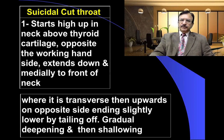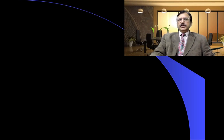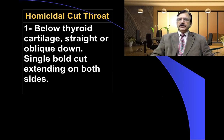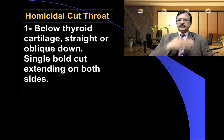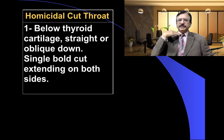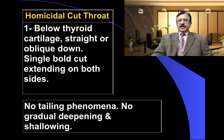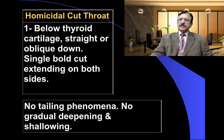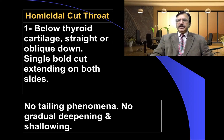In homicidal cutthroat, the wound is usually below the thyroid cartilage. It is horizontal — that is straight or oblique — and a single bold cut which usually lies on both sides of the neck. There is no tailing phenomenon and no gradual deepening or shallowing; a bold cut horizontally or obliquely placed extending usually on both sides of the neck.